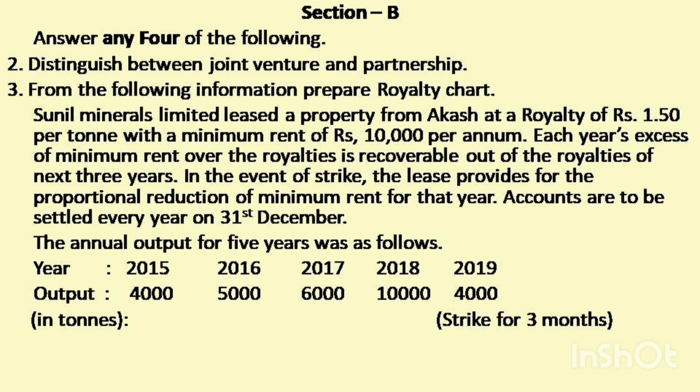2015: 4,000 tonnes; 2016: 5,000 tonnes; 2017: 6,000 tonnes; 2018: 10,000 tonnes; 2019: 4,000 tonnes. But in 2019, there is a strike for three months. You must reduce the minimum rent proportionate to the three months.